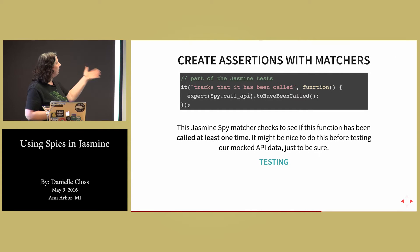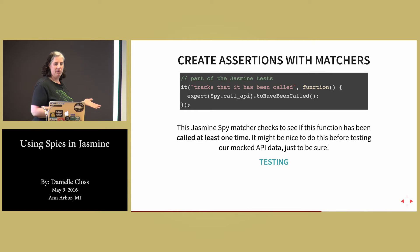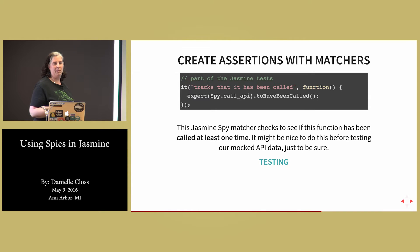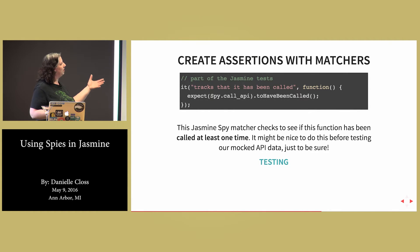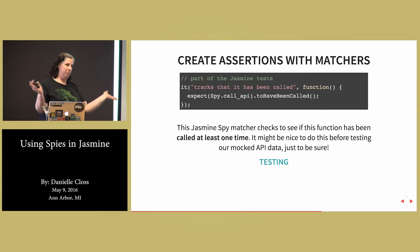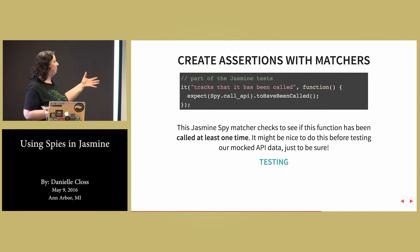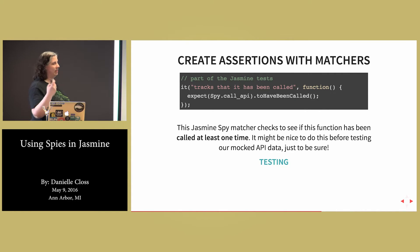Then we can create assertions with matchers. Jasmine spies have special matchers, like toHaveBeenCalled right here — that just checks to see if it's been called at least one time. I've gotten into the habit of always doing this before I do any of my other tests, because this makes sure that it's been called. And if this fails, everything else is going to fail.